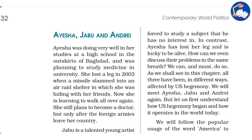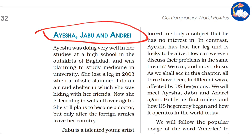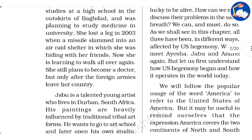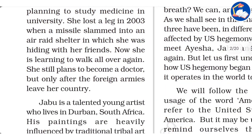Before we begin the chapter, look into the story of Aisha, Jabu, and Andre. Aisha is doing well in her studies at a high school on the outskirts of Baghdad, Iraq. She was planning to study medicine at university. She lost a leg in 2003 when a missile slammed into an air raid shelter in which she was hiding with her friends. Now she is learning to walk all over again.